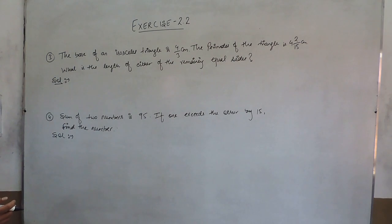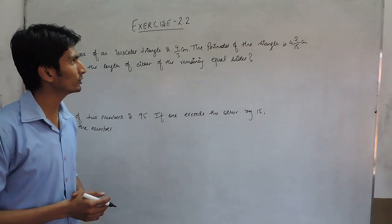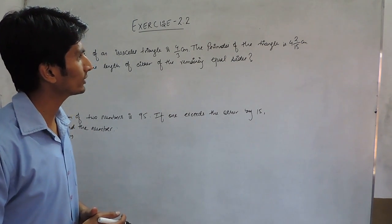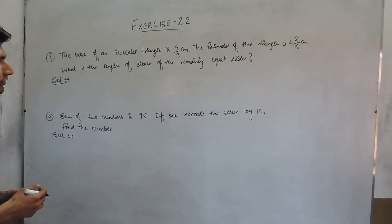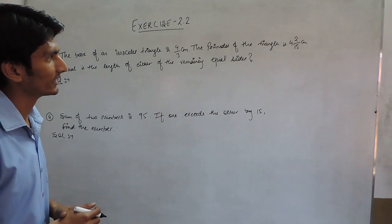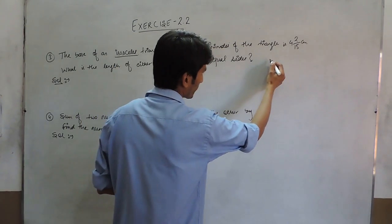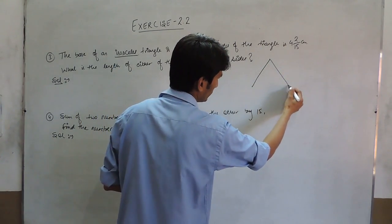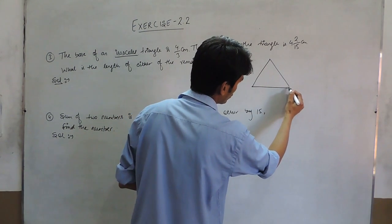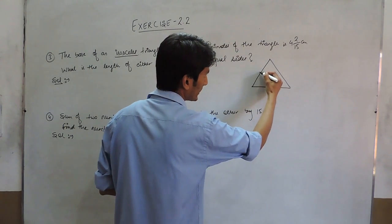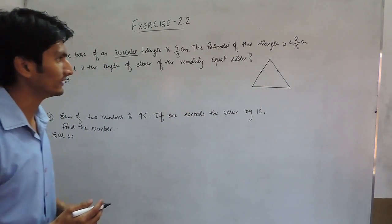it is given the base of an isosceles triangle is 4/3 cm. The perimeter of the triangle is given and you have to find the remaining two equal sides. We know the isosceles triangle is a triangle whose two sides are equal in length.